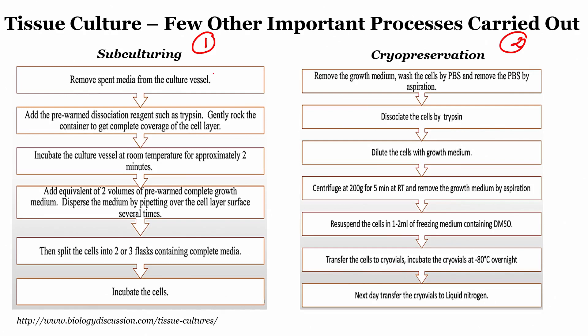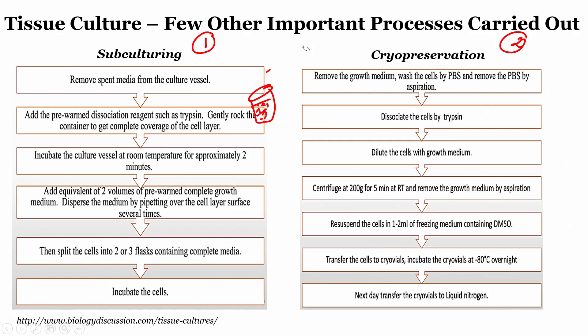For subculturing, the process is: remove spent media from the culture vessel, add the pre-warmed dissociation reagent such as trypsin, gently rock the container, then incubate the cell culture at room temperature. Rock the container a little bit, then keep it for two minutes at room temperature.